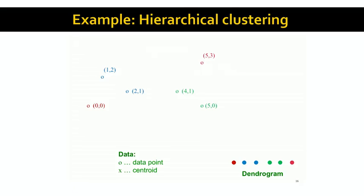An example will make this clear. Here we have six points in a Euclidean space, represented as O's. We're going to apply an agglomerative clustering method. Initially, we determine that the points (1,2) and (2,1) are the closest points. We combine them into a single cluster and represent this cluster by its centroid. The average of the points (1,2) and (2,1) is the point (1.5, 1.5), which is the centroid of this newly created cluster.